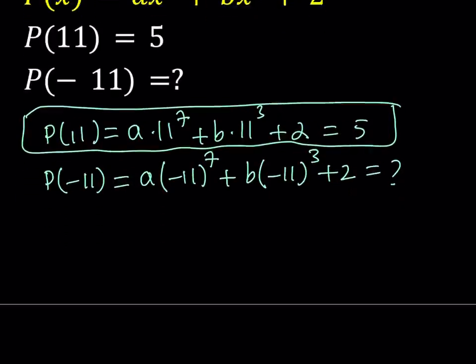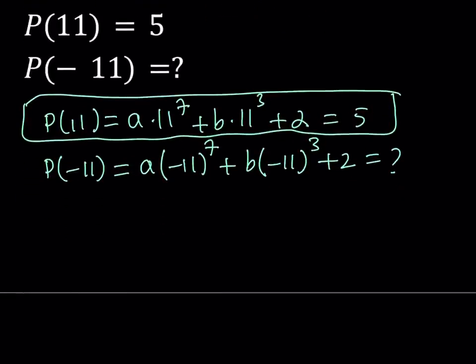But one thing we can do is, we can just go ahead and isolate some of the terms. So we can write this as 11 to the 7th power A plus 11 to the 3rd power B. And since plus 2 is equal to 5, it's just going to be 3. If you subtract 2 from both sides, then you're going to get our expression to equal 3.